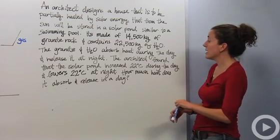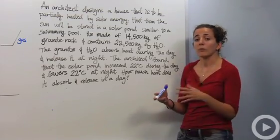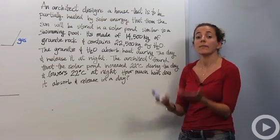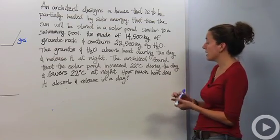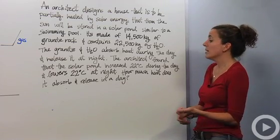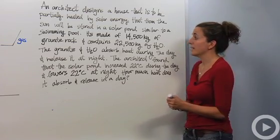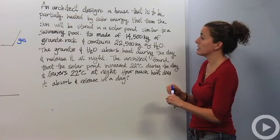Together, the granite and the water absorb heat during the day and release it at night into the house, heating the house at night. The architect found that the solar pond increases 22 degrees Celsius during the day and lowers 22 degrees Celsius at night. How much energy does it release and absorb during the day?